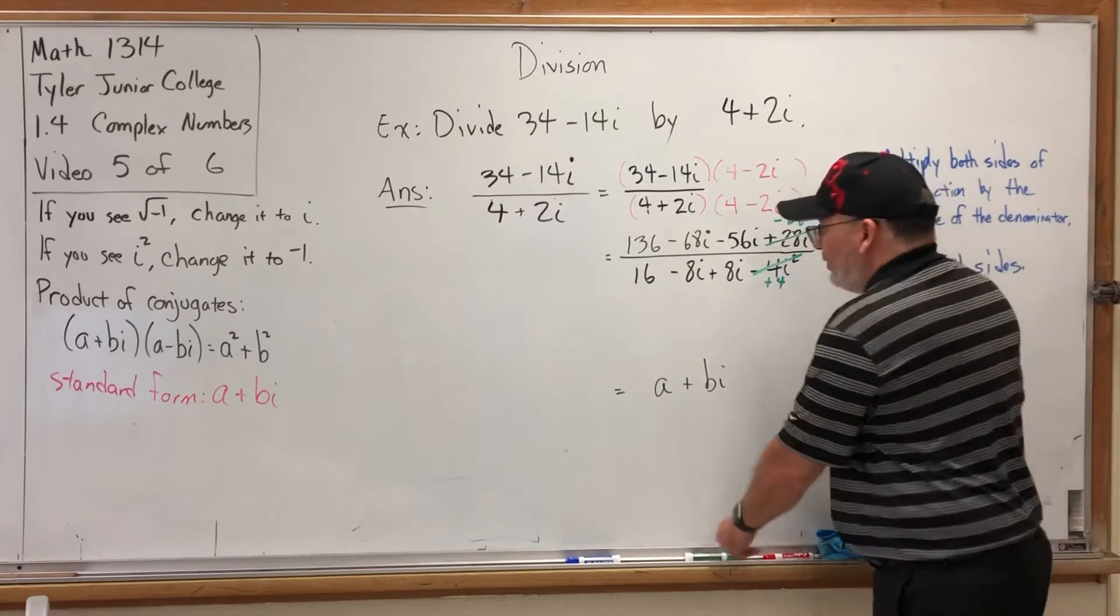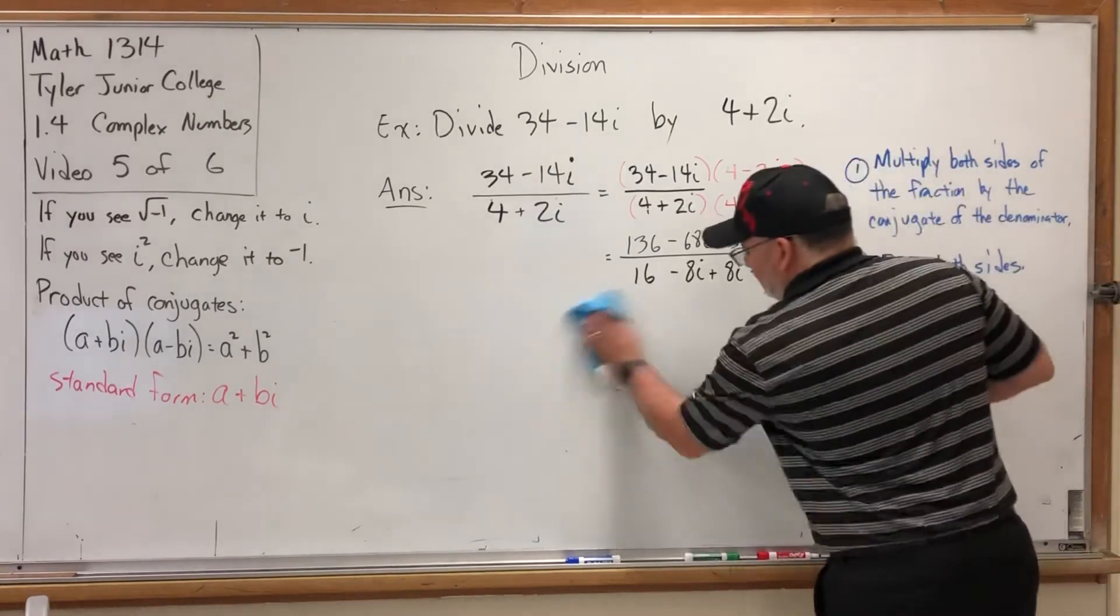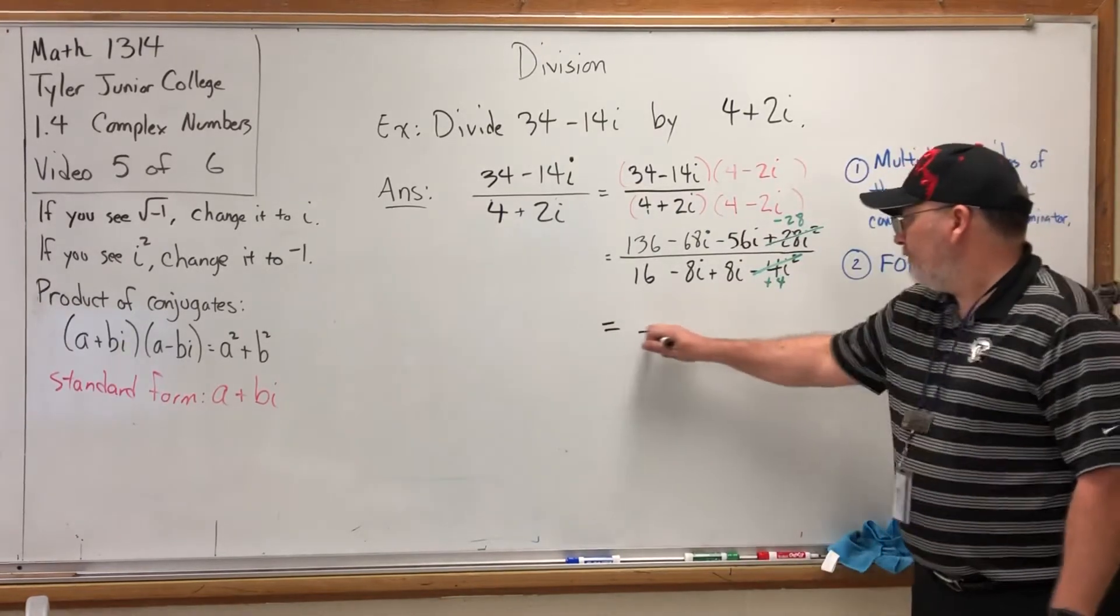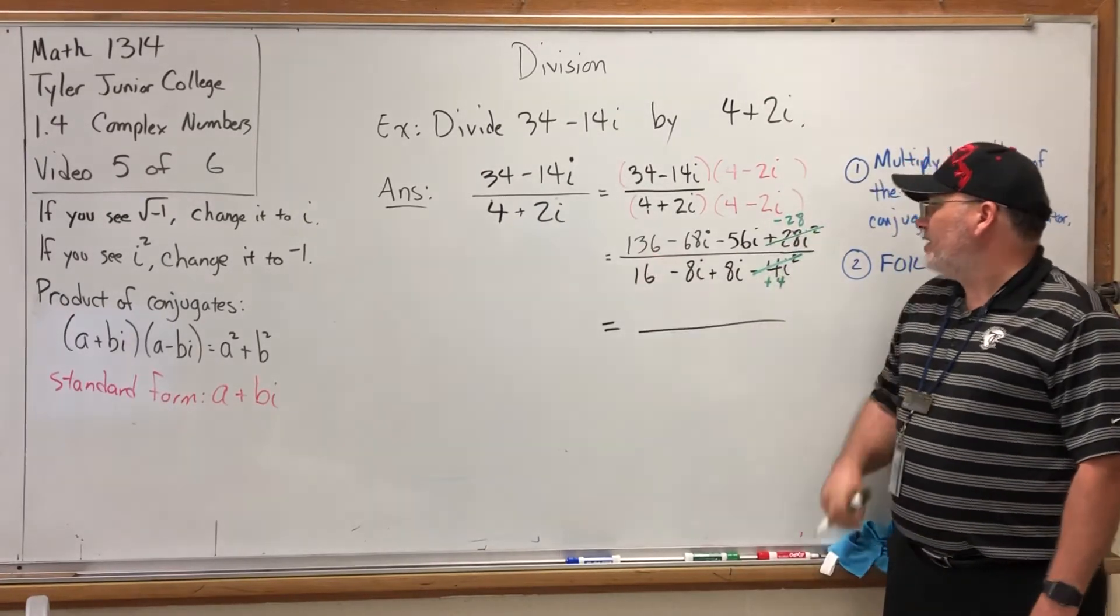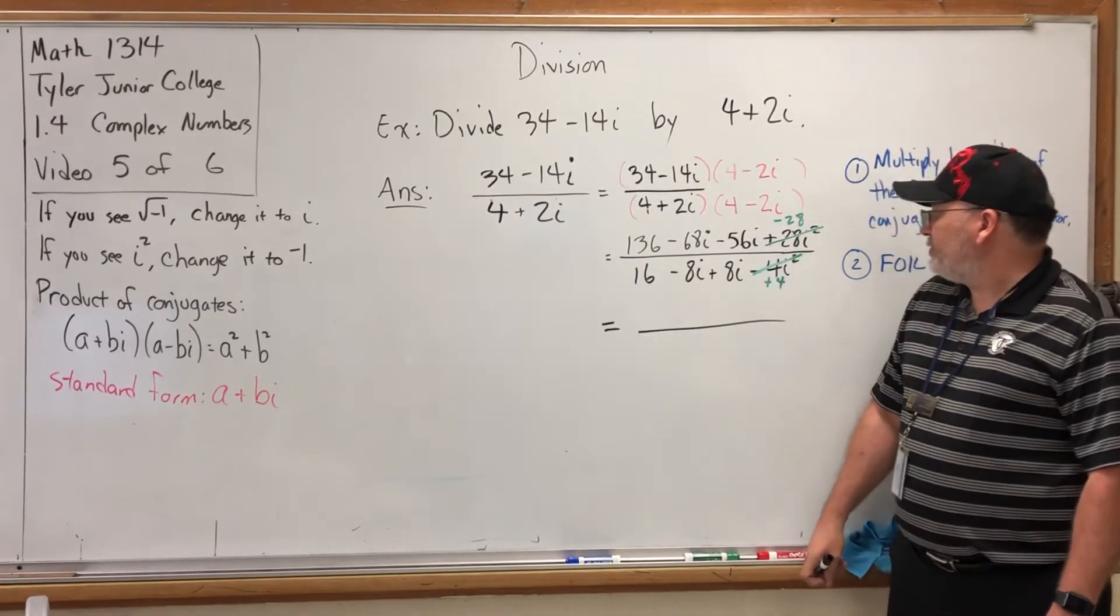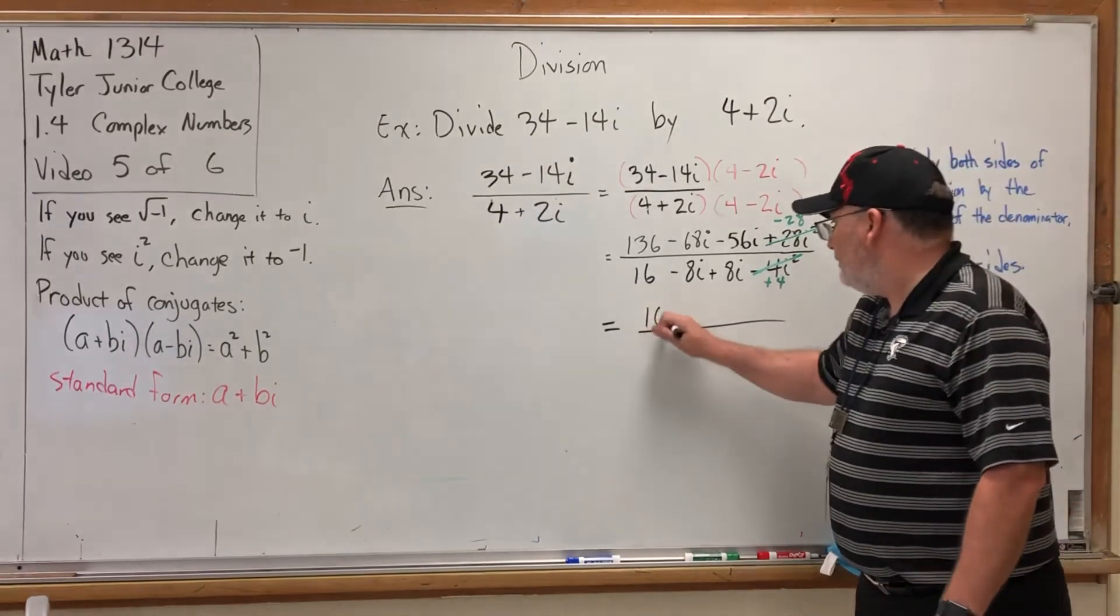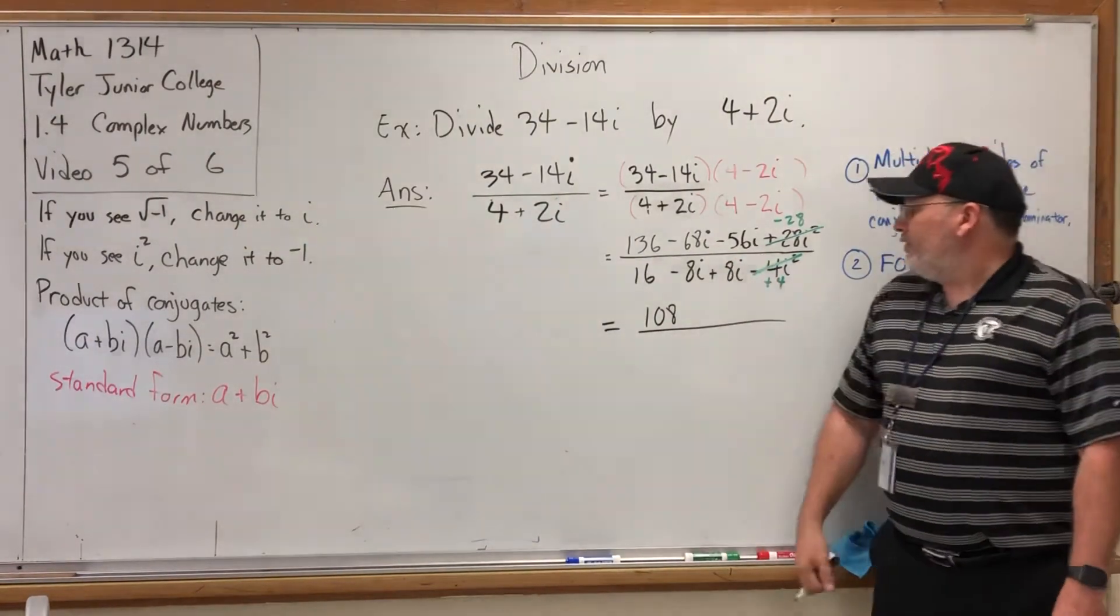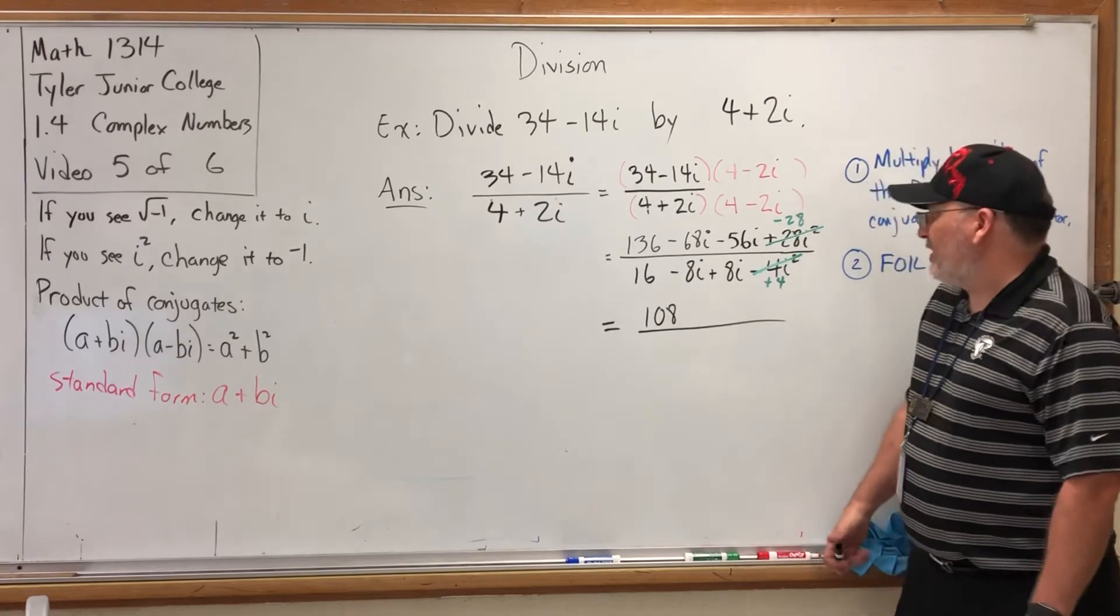So now let's combine everything on the top and on the bottom. I think we can get rid of this. Okay, on the top we have two real terms: 136 and -28. 136 - 28 is 108. Let me double-check that. Correct.